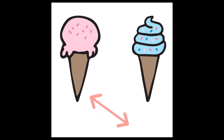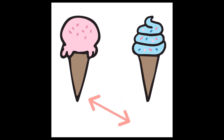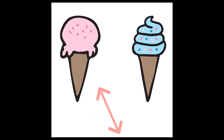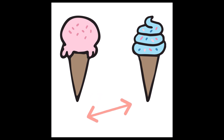Okay, what did you find? Well, the first thing I found was the color. Did you notice that? One ice cream cone is pink with pink sprinkles and the other ice cream cone is blue with colored sprinkles. Did you notice that?